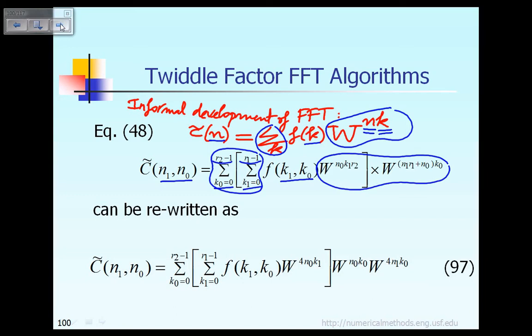Up to the first two equations on this slide just come from the previous lecture. Now, what we can say is this: The second equation for C tilde can be rewritten as following. If you look here, you have n0 times k1, that is the power w, that term is here. And then you replace r2 equal to 4.